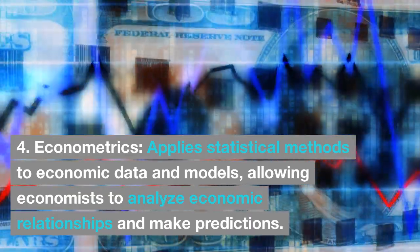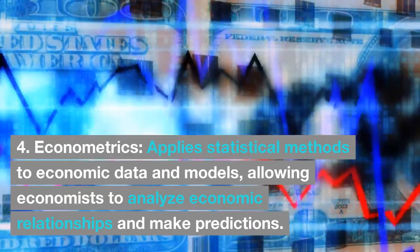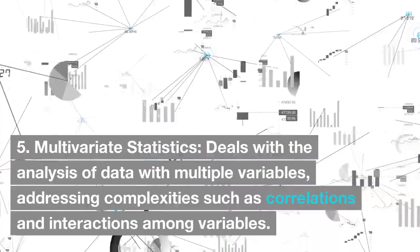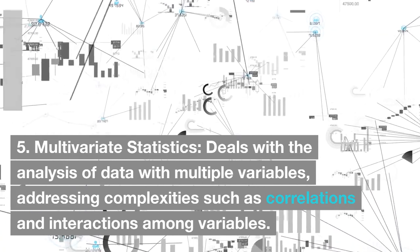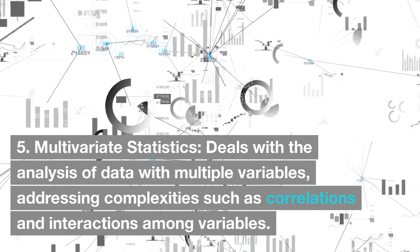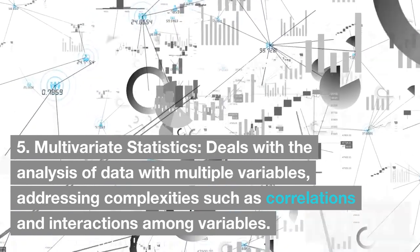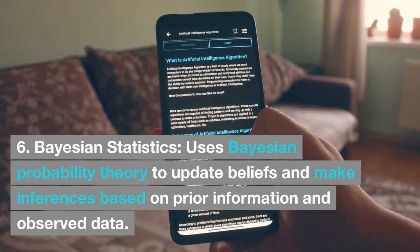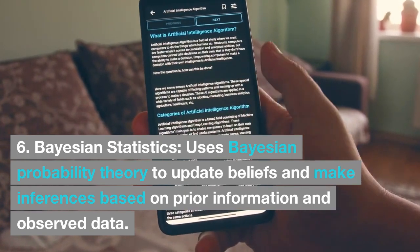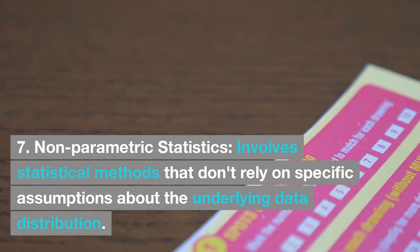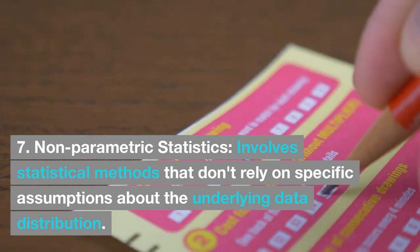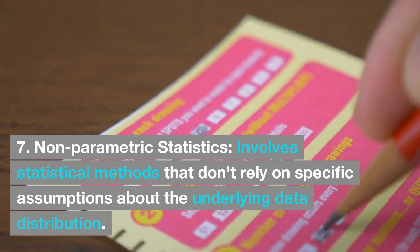Econometrics applies statistical methods to economic data and models, allowing economists to analyze economic relationships and make predictions. Multivariate statistics deals with the analysis of data with multiple variables, addressing complexities such as correlations and interactions among variables. Bayesian statistics uses Bayesian probability theory to update beliefs and make inferences based on prior information and observed data. Non-parametric statistics involves statistical methods that don't rely on specific assumptions about the underlying data distribution.